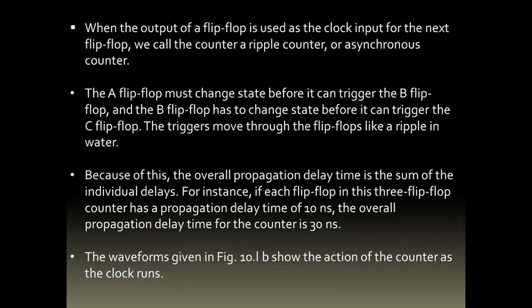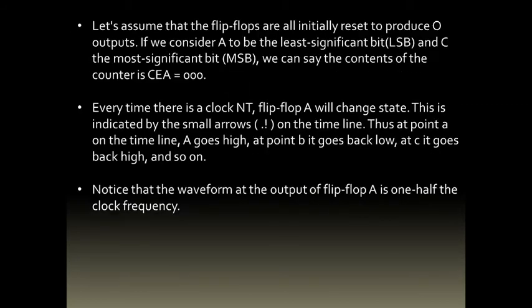The waveform shows the action of the counter as the clock runs. Assume all flip-flops are initially reset to zero. If A is the LSB and C is the MSB, the content of the counter CBA equals 0 0 0. Every time there is a clock negative transition, flip-flop A will change state, indicated by small arrows at different instants on the timeline. At point A on the timeline, A goes high; at point B, it goes back low; at C, it goes back high, and so on.